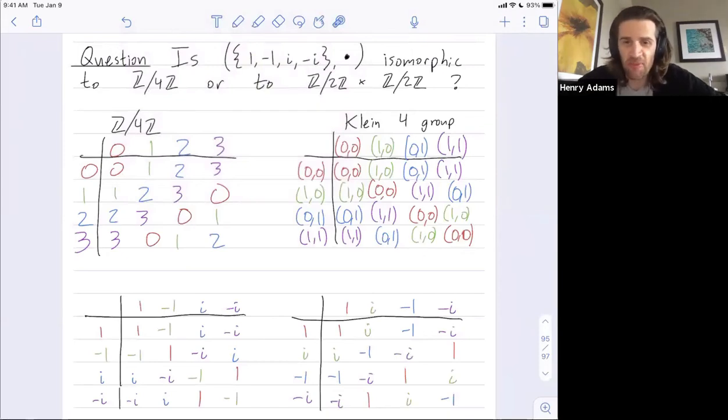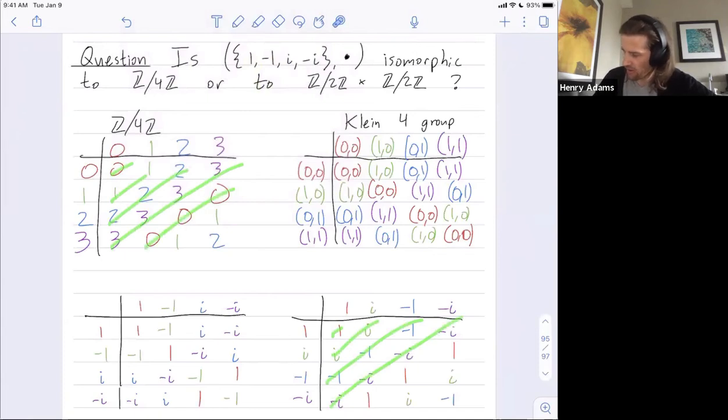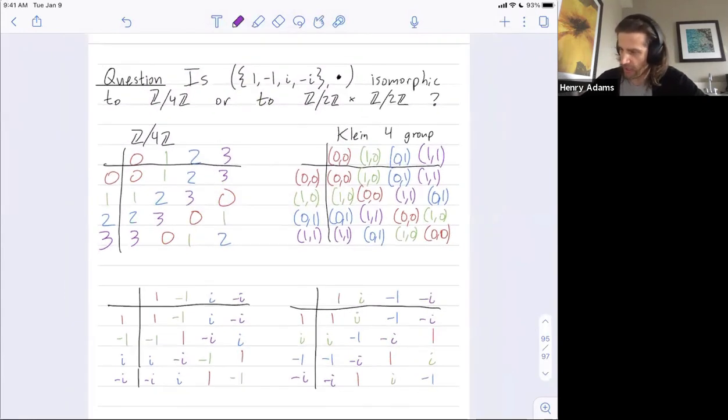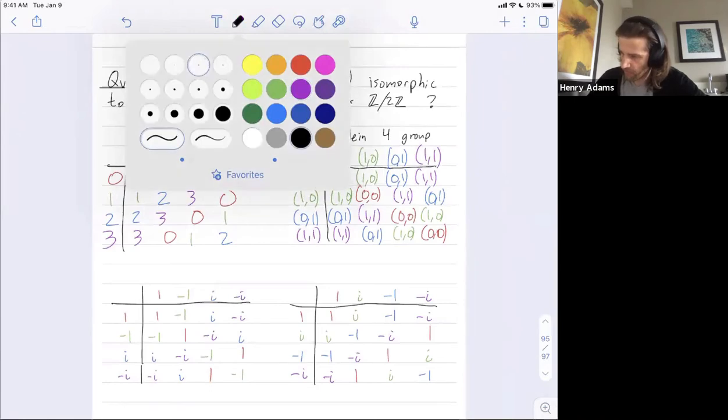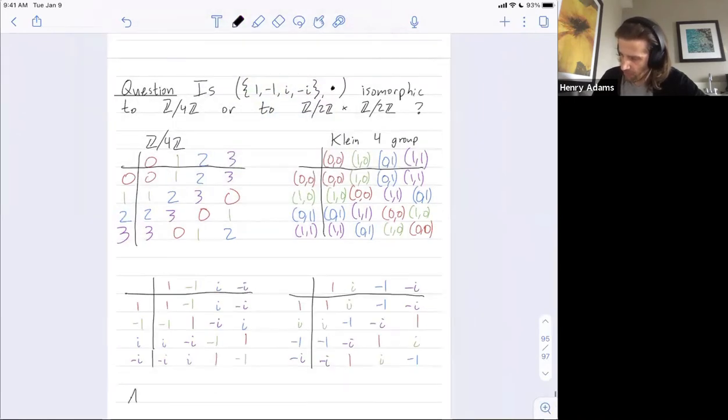So this group is actually isomorphic to z mod 4z. You can see that these diagonal bands indeed match up perfectly with all the right colors.